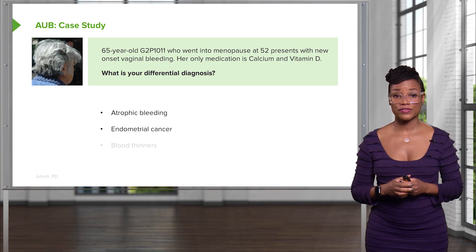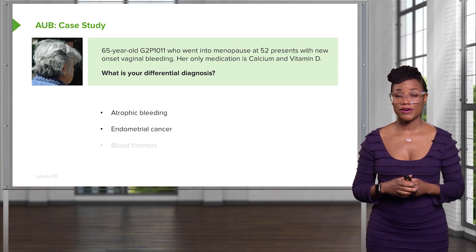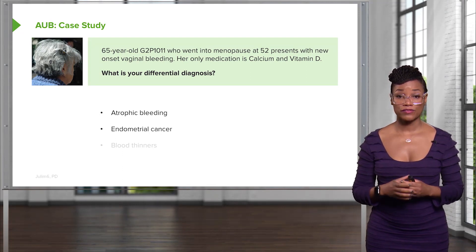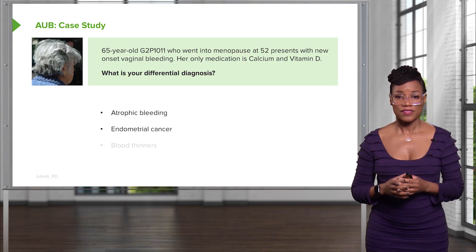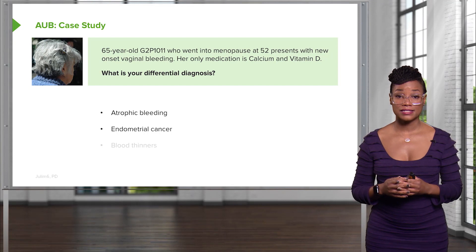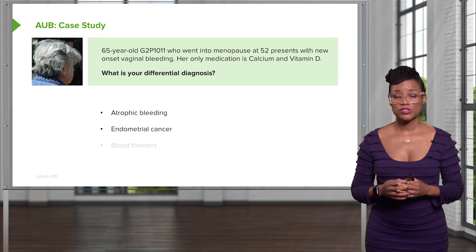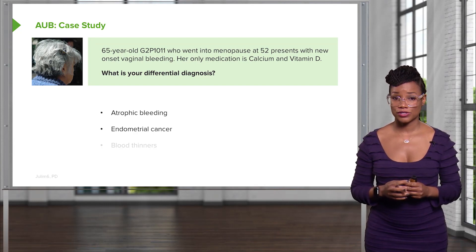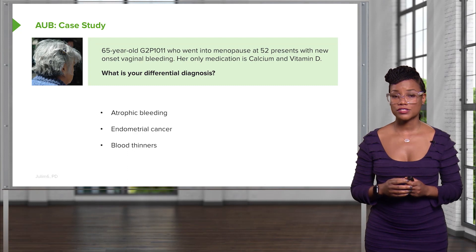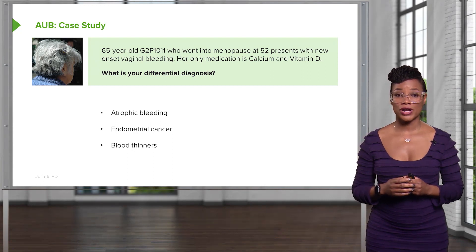These patients are also at risk for endometrial cancer. While this patient seems normal and healthy, the very obese patient has unopposed estrogen because of peripheral aromatization that occurs in the adipocytes. That estrogen affects the lining of the endometrium and can lead to endometrial cancer. Polycystic ovarian syndrome patients during their reproductive years can also be at risk for endometrial cancer in their postmenopausal years. Also, these patients are older and can be on blood thinners for cardiovascular reasons.